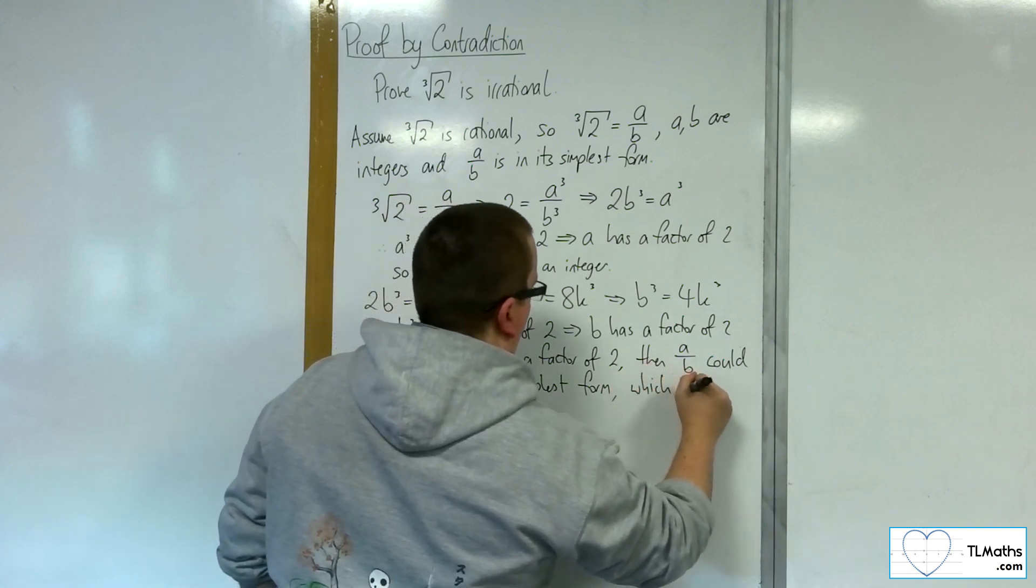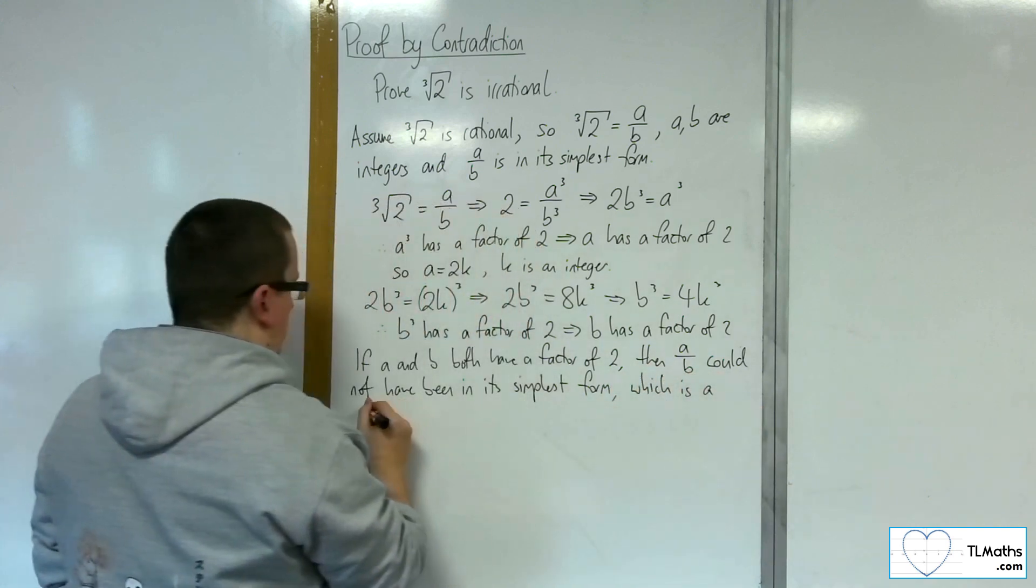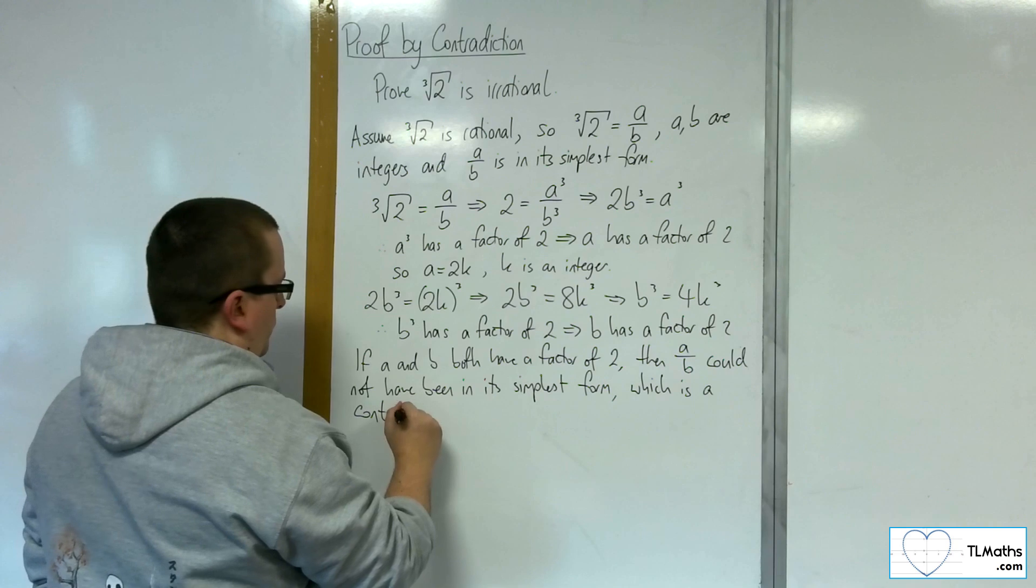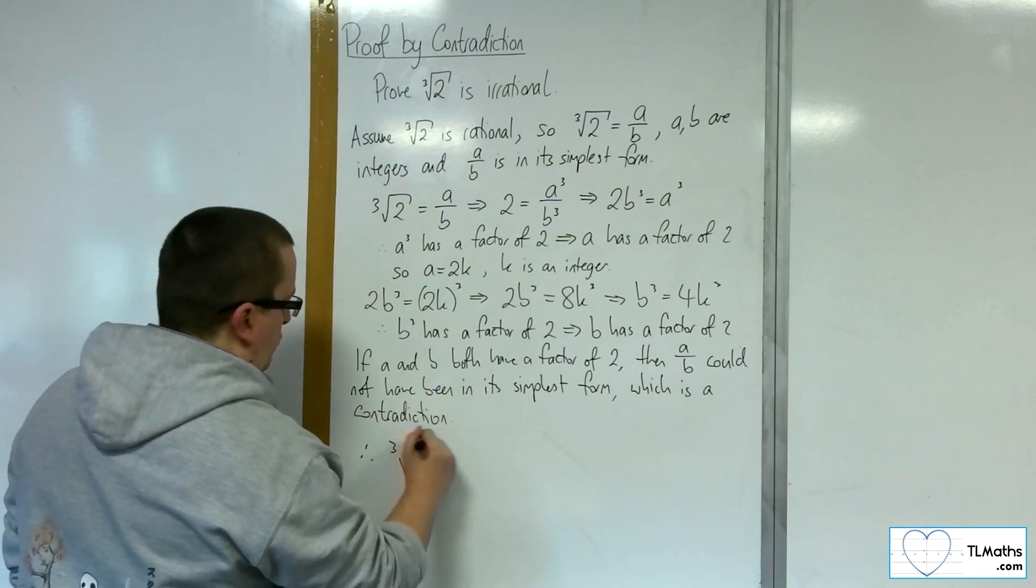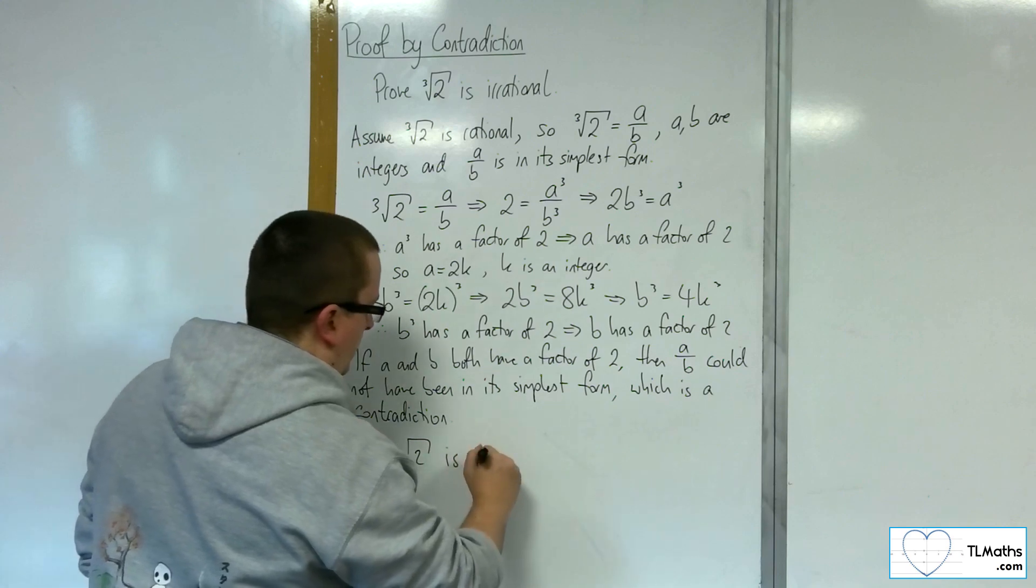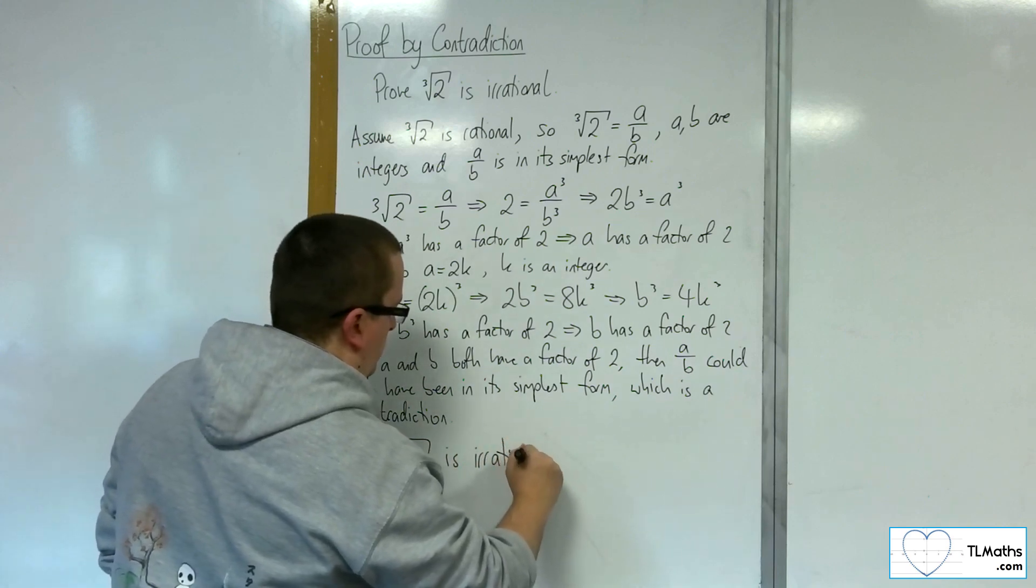And that is the contradiction. So therefore, the cube root of 2 is irrational.